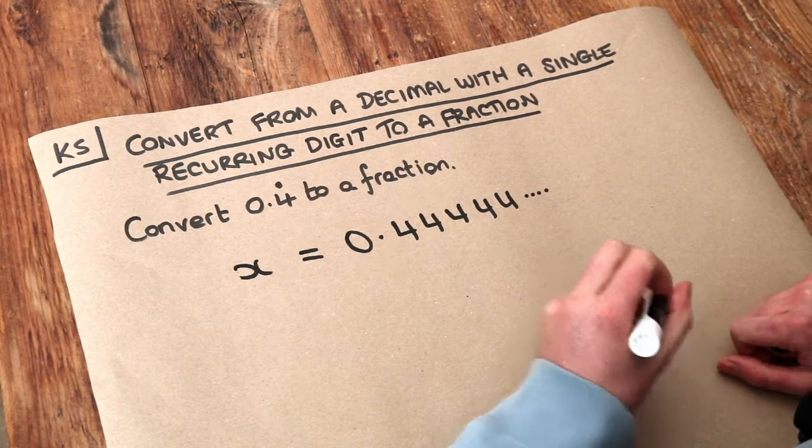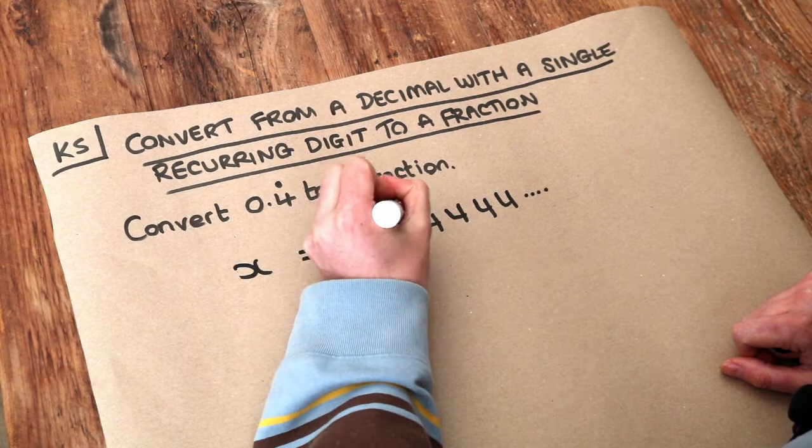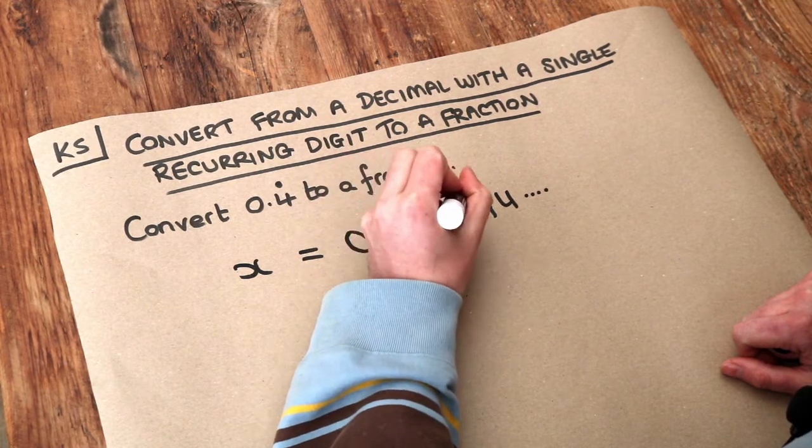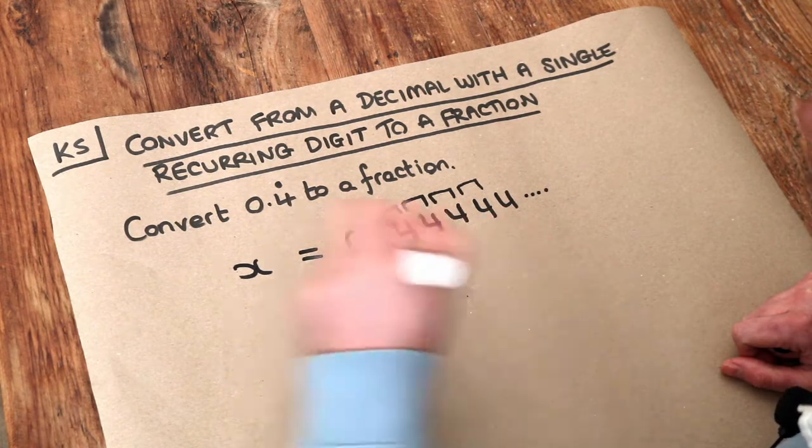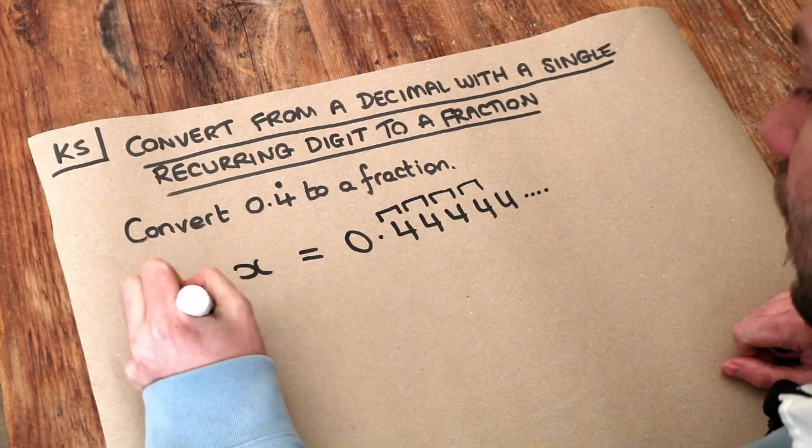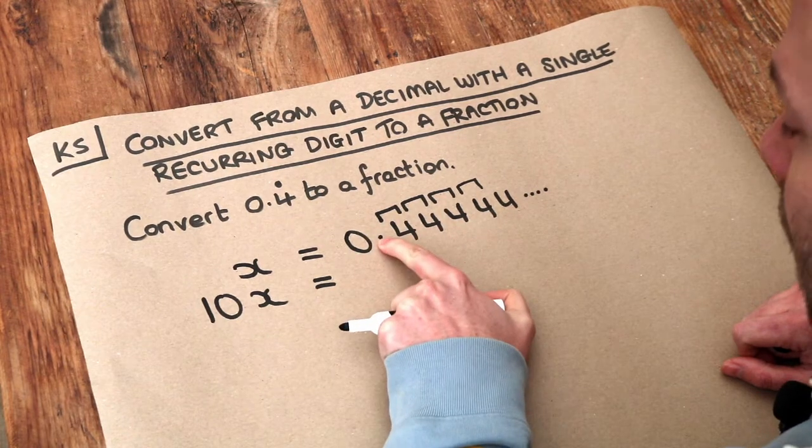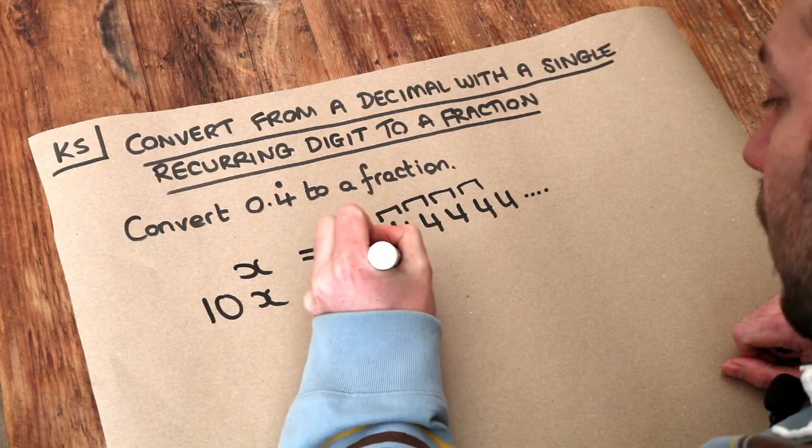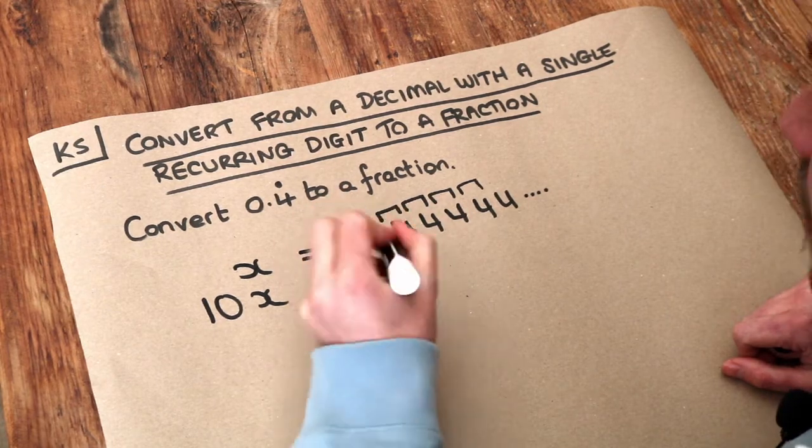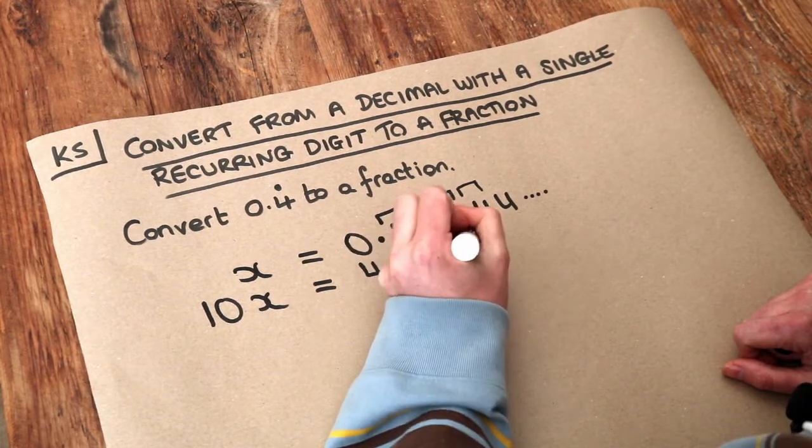Now the generic method for this is to identify how often this digit is repeating. We can see it's repeating every one digit. And if that happens, we times both sides of the equation by 10. So we've got 10x, and if we times this by 10, it moves the decimal point once and we get 4.444. I'm going to put the decimal point here in the same place because it's going to make the next step easier to do.